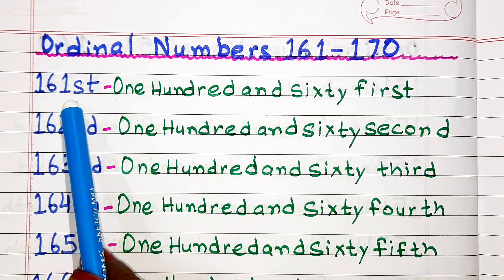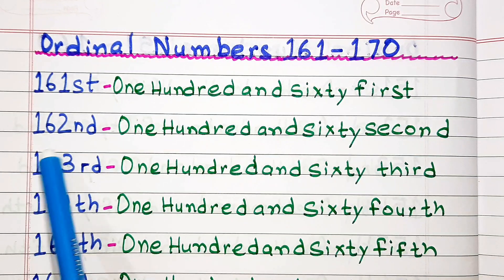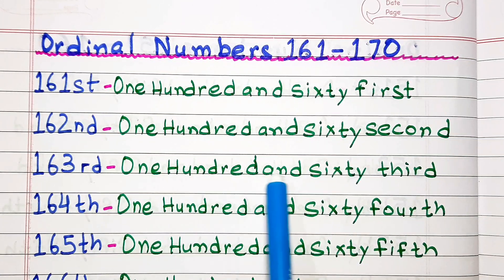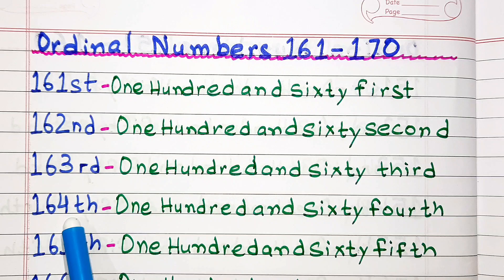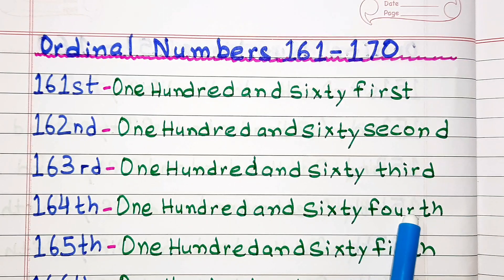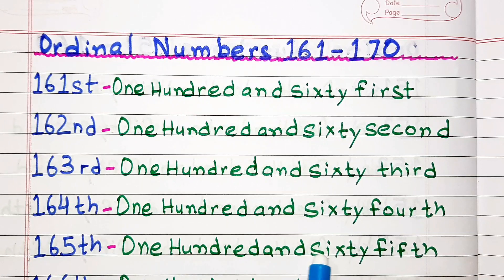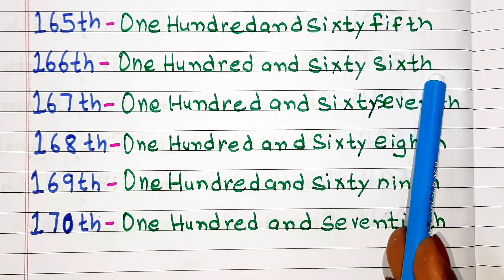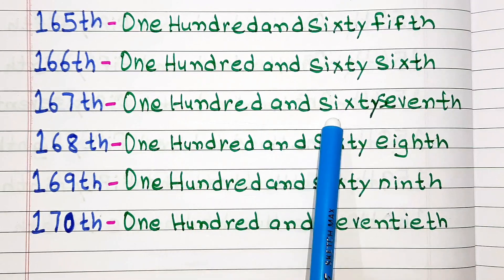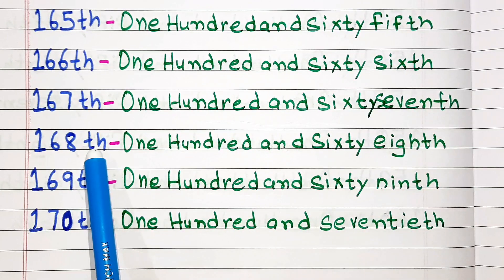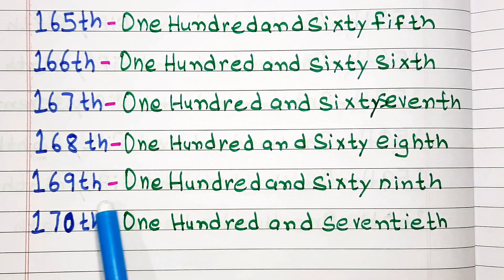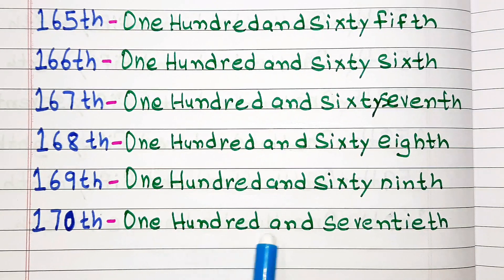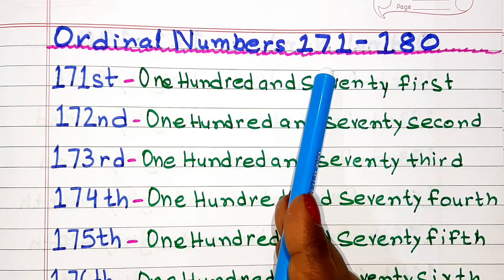Ordinal numbers from 161 to 170. 161st. 162nd. 163rd. 164th. 165th. 166th. 167th. 168th. 169th. 170th.